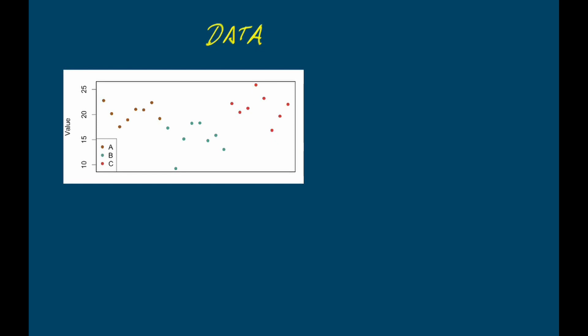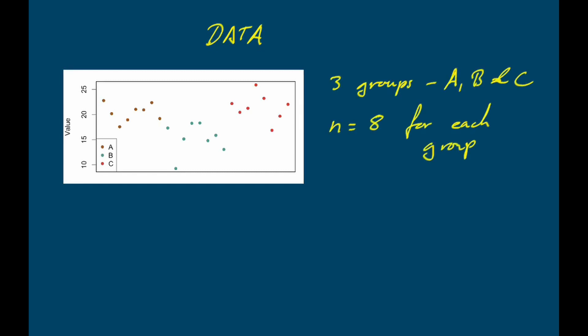Here are the data from the previous video. We have three groups, A, B, and C, with eight data points in each group, giving a total sample size of 24. To calculate the total sum of squares, we calculate the overall mean for all the data, subtract that value from each data point, square each result, and add them all together. That gives us a total sum of squares of 309.44.